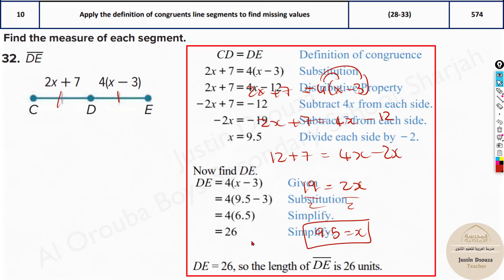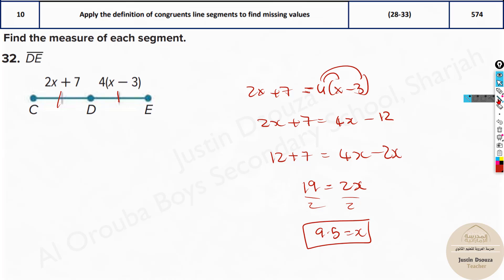That's how we do this. Now my bad, I did X value but did I do DE? No. I need to substitute it back. I can do any equation because both are congruent. I'll do both. See you can substitute over here 2 times 9.5 plus 7. 2 times 9.5 is 19 plus 7. The answer is 26.